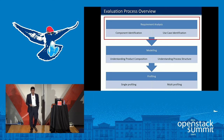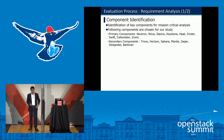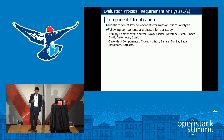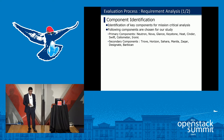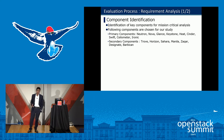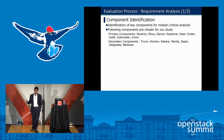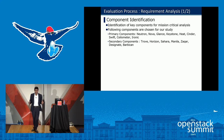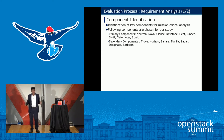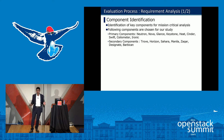Let's focus on the requirement analysis phase. Component identification: in this talk we reference a system we created and analyzed. We chose the following primary components: Neutron, Nova, Glance, Keystone, Heat, Cinder, Swift, Ceilometer, and Ironic. Secondary components — which are optional — included Trove, Horizon, Sahara, Manila, Zaqar, Designate, and Barbican.